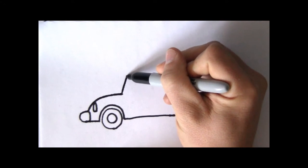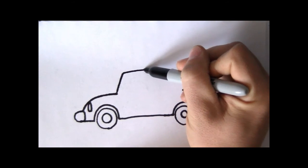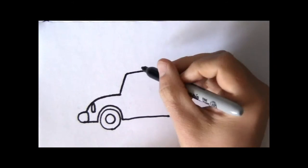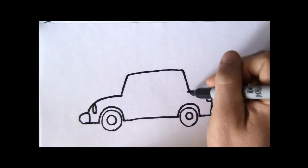Next let's draw the top of the car where you can see out. It was a line, the top line for the roof, and a back line.